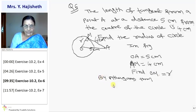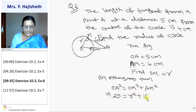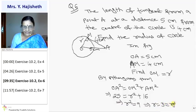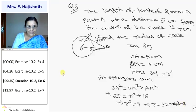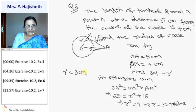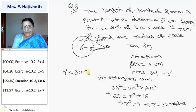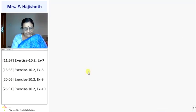So by Pythagoras theorem, what you are going to get: OA square is OM square plus AM square. OA square is 25, OM square is R square and this is 16. So my R square is 9. So R will be 3. That is radius. So radius R is 3 cm.